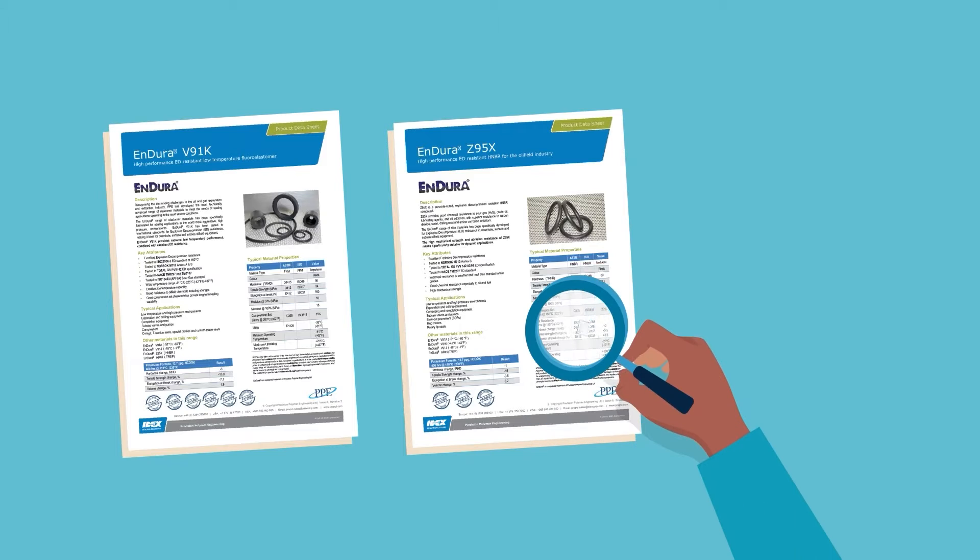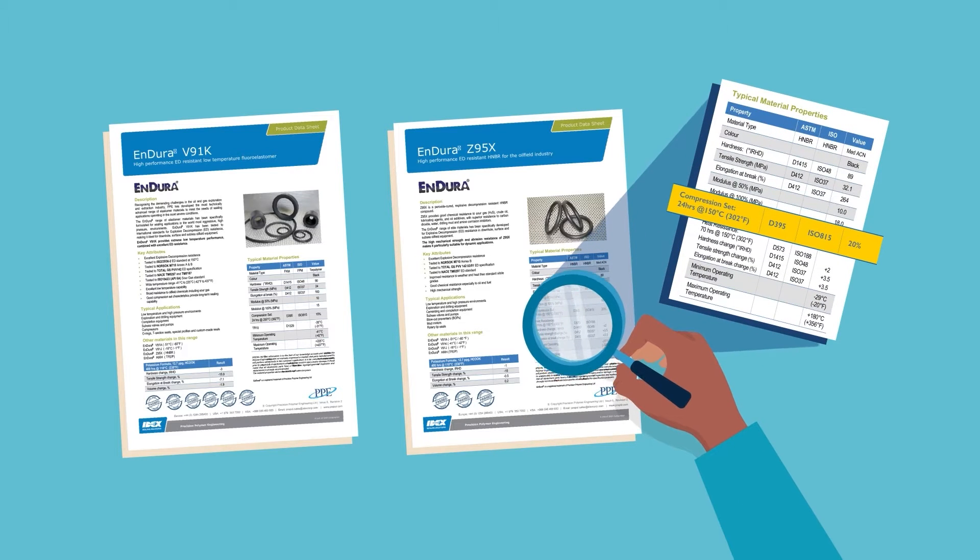Compression set is one of the key values listed on any elastomer material data sheet for an oil and gas application. But what is compression set? How is it caused and what can be done to avoid it?